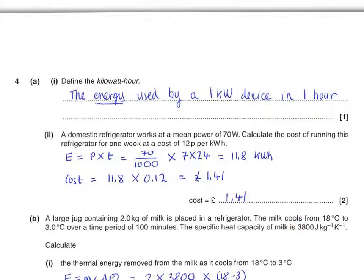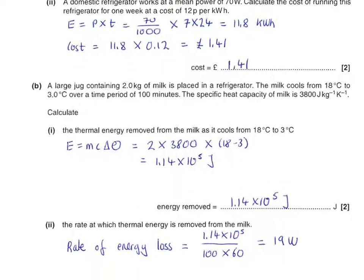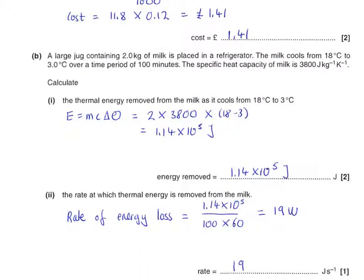Part B is when the G484 material per se comes into play. We've got a jug containing 2 kg of milk placed in the refrigerator, and the milk cools from 18 to 3°C over a period of 100 minutes. The specific heat capacity of milk is that value there—quite close to water, 4200. Obviously milk is predominantly water, the fat lowering it a bit. Calculate the thermal energy removed from the milk—it's straightforward: E = mcΔθ. We've got m of 2 kg, c from the question, and Δθ is just 18 minus 3, the temperature difference. That comes to 1.14×10⁵ joules.